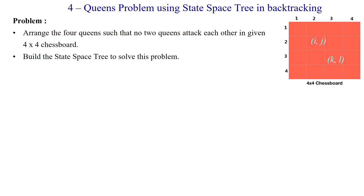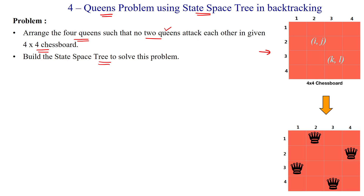In this session we will discuss the 4 queens problem by constructing the state space tree. The chessboard is given with a 4x4 number of rows and columns, and we have to arrange the queens such that no two queens attack each other. We can build the state space tree to solve this problem, finding solutions where no two queens attack each other row-wise, column-wise, or diagonal-wise.